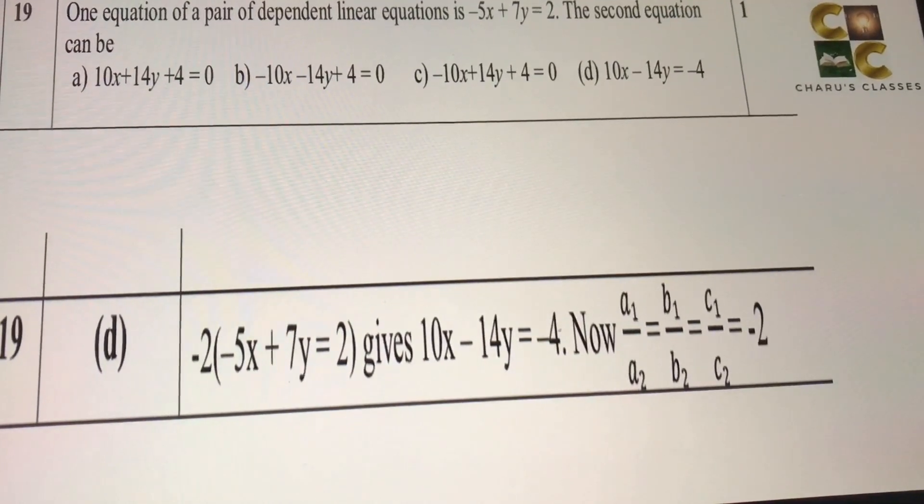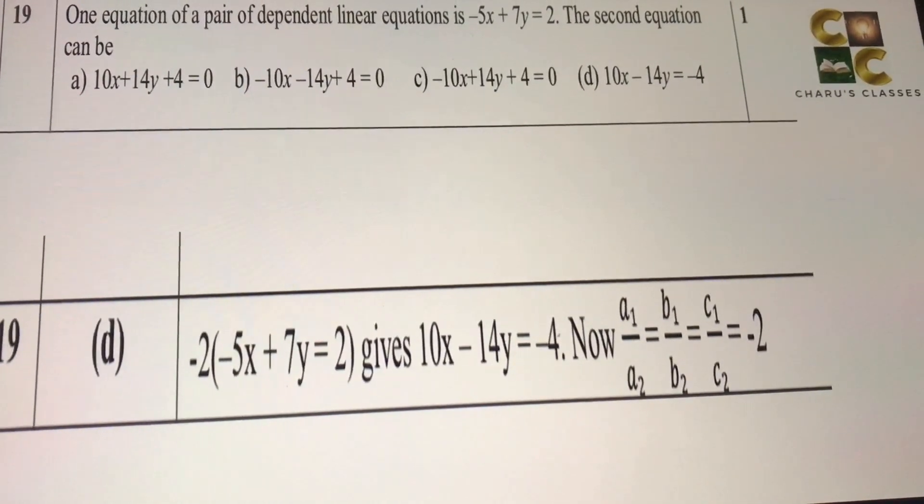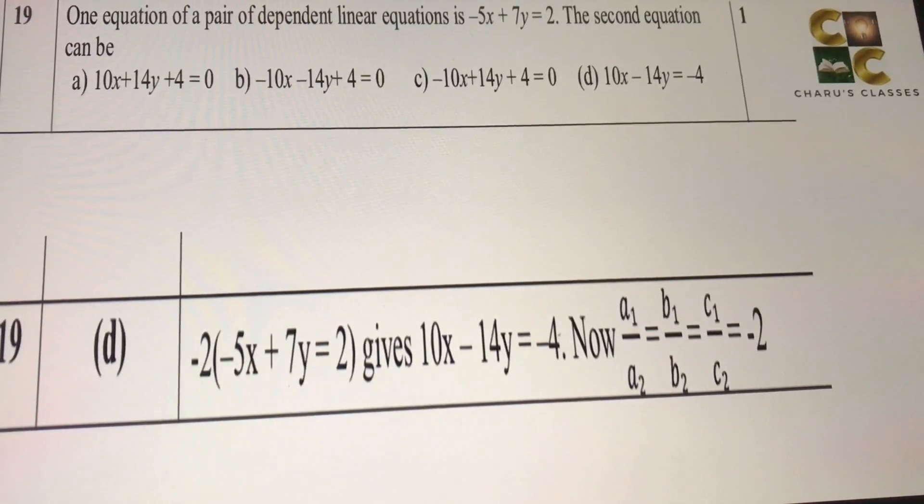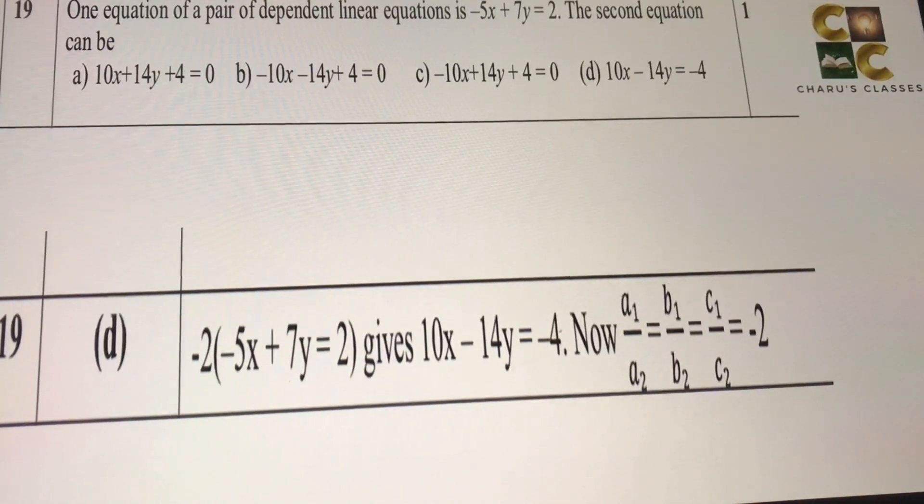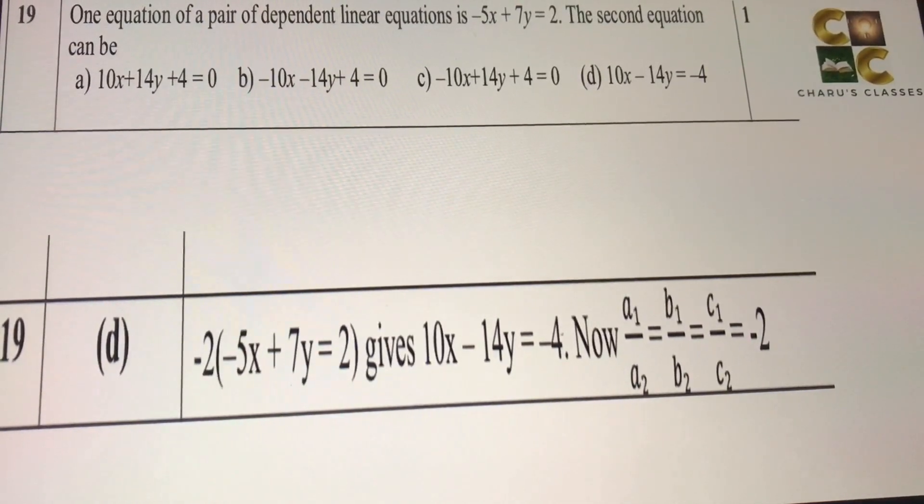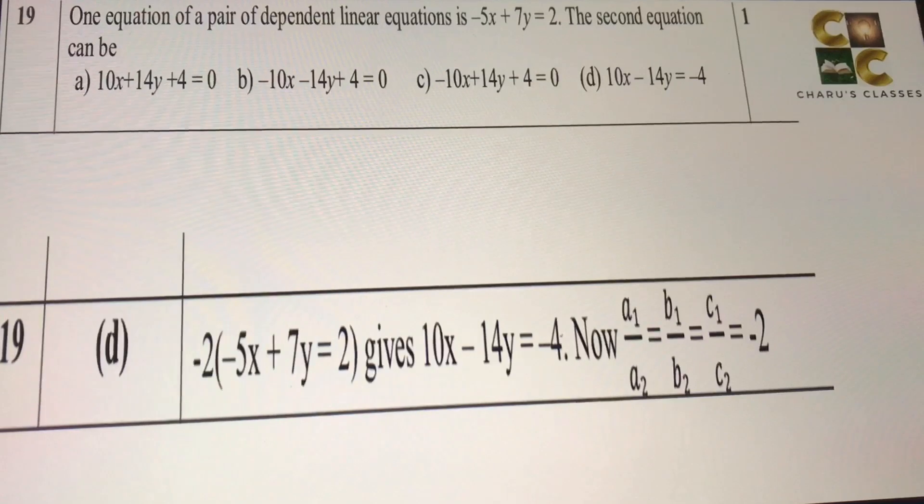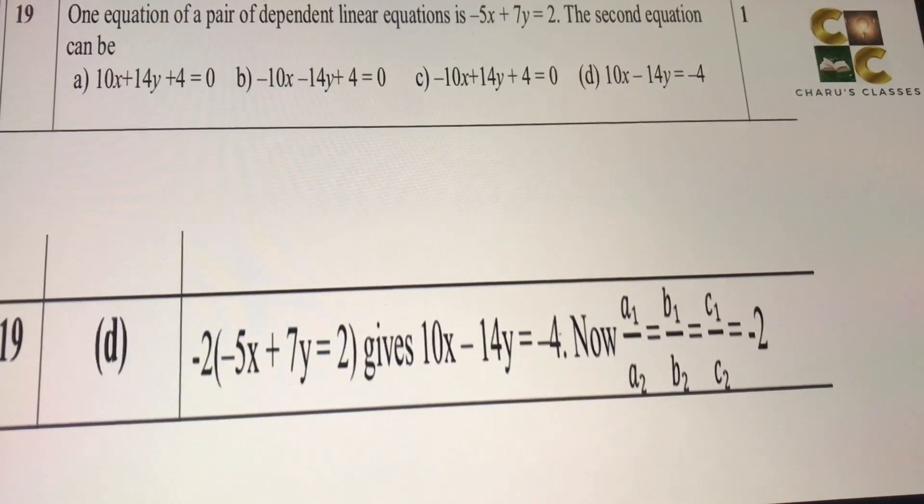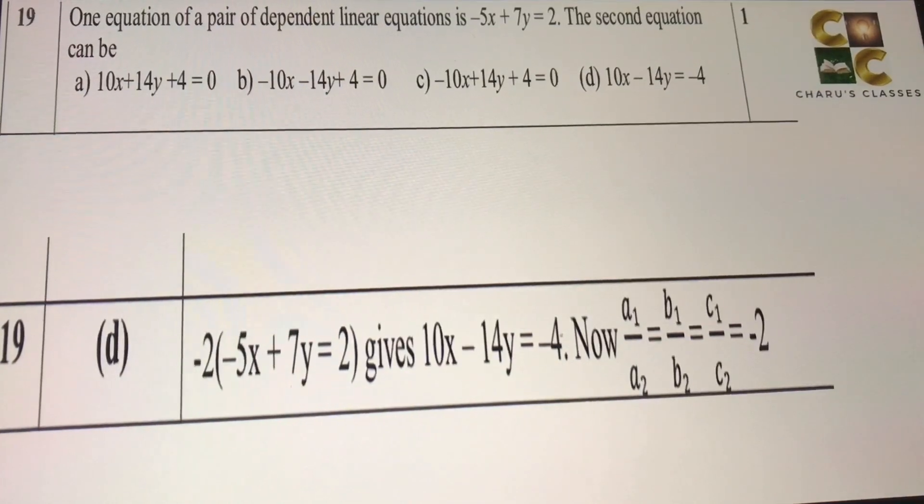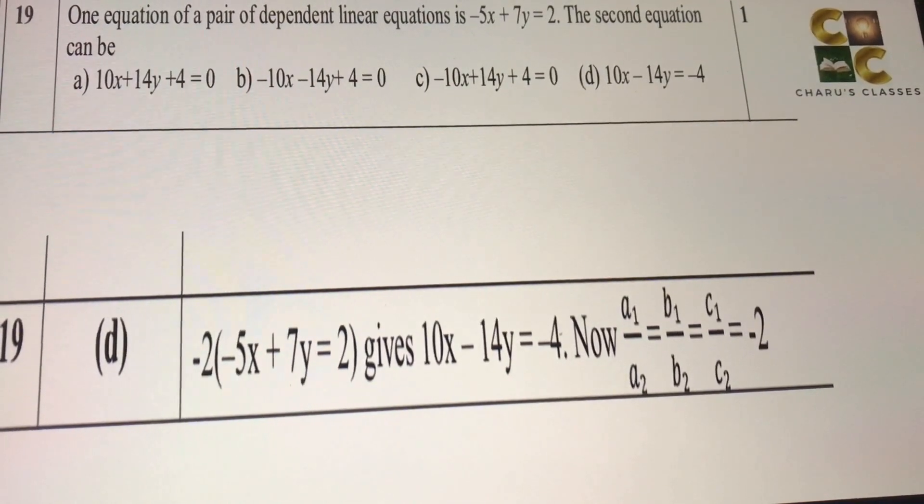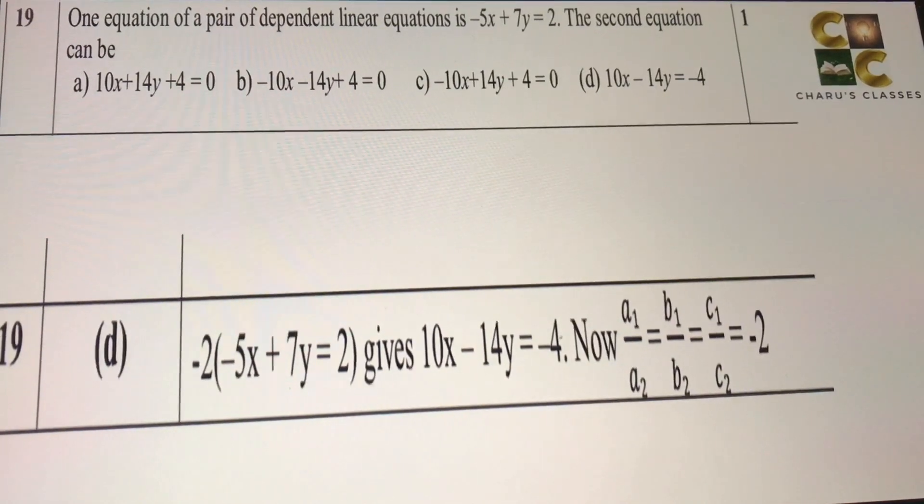Nineteenth question: One equation of a pair of dependent linear equations is -5x + 7y = 2. Then the second equation can be. So whenever they say about dependent linear equations, they are talking about coincident lines basically. So we know, A1/A2 = B1/B2 = C1/C2.